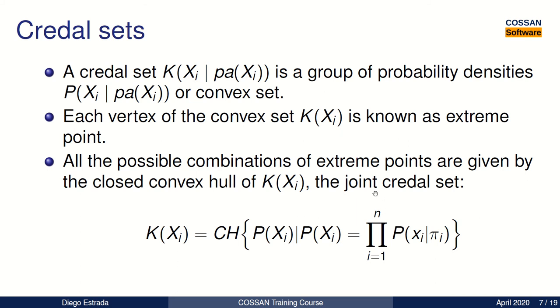The joint Credal set can be equivalent to the joint probability distribution of a Bayesian Network, and it is known as the strong extension of the Credal Network, due to the stochastic independence needed between the extreme points.